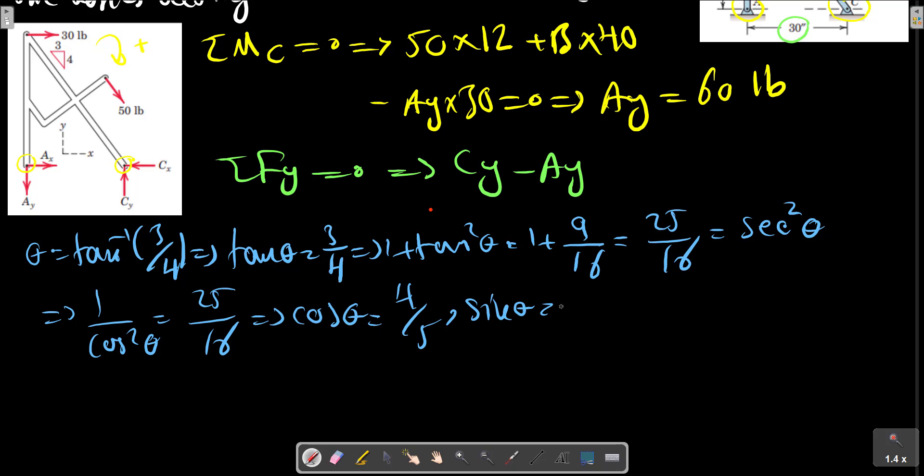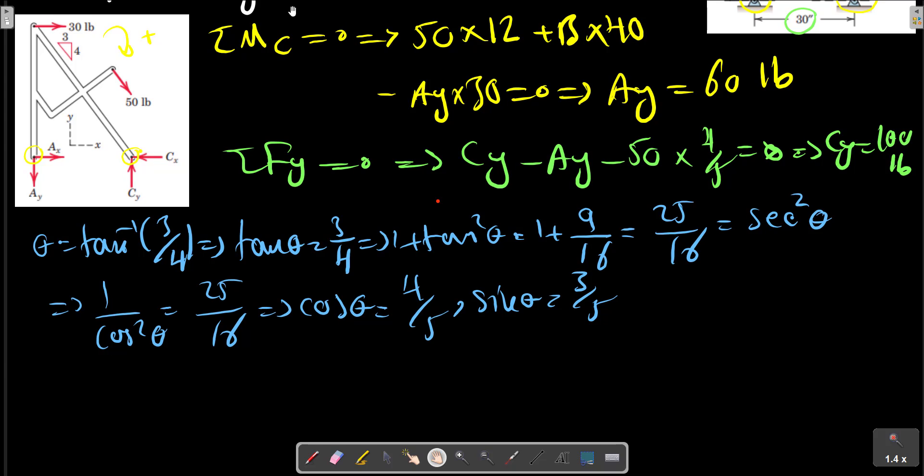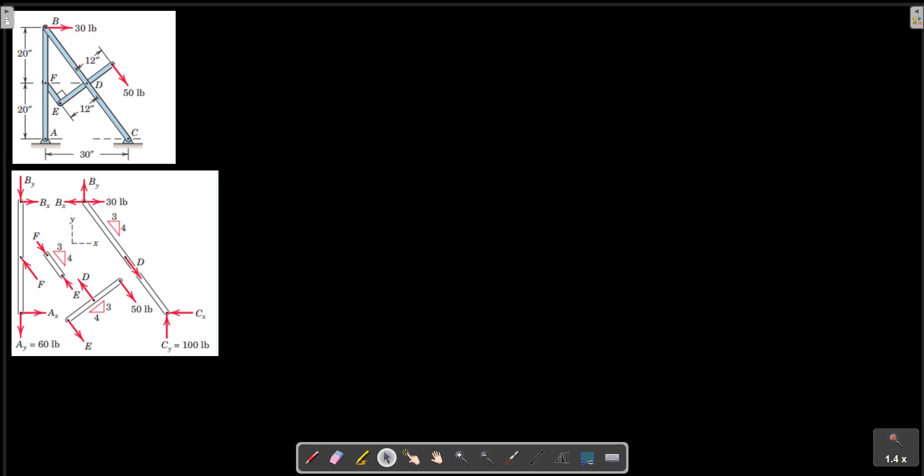And sine theta is minus Ay minus 50 multiply 2 cosine theta. Cy is 100. Other forces in the support can be calculated from analysis of each member at equilibrium. Consider the next picture for the free body diagram of each member.